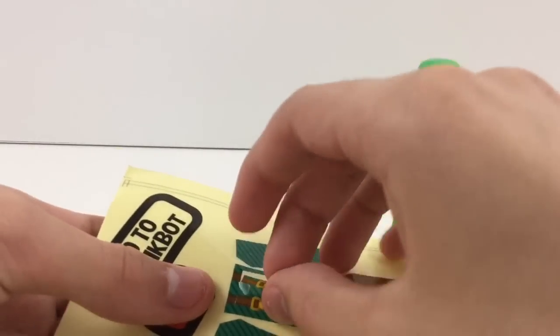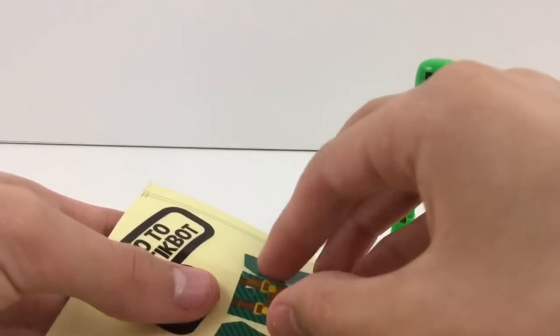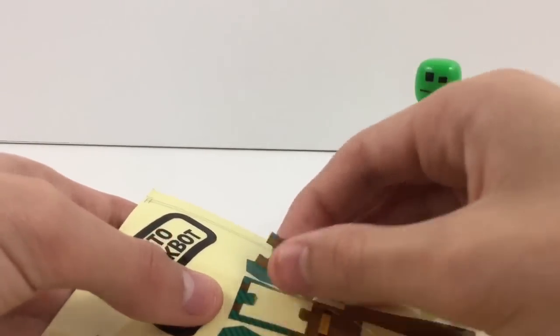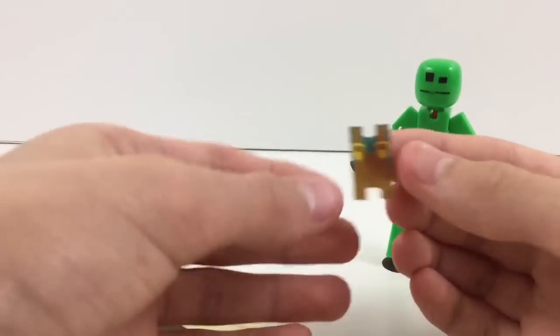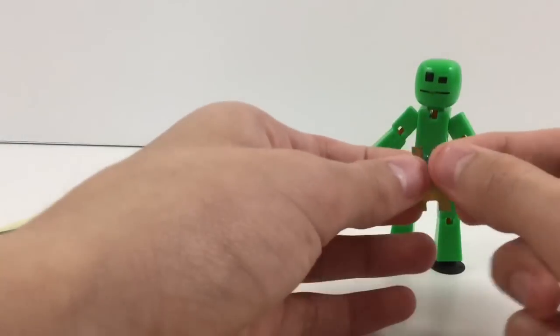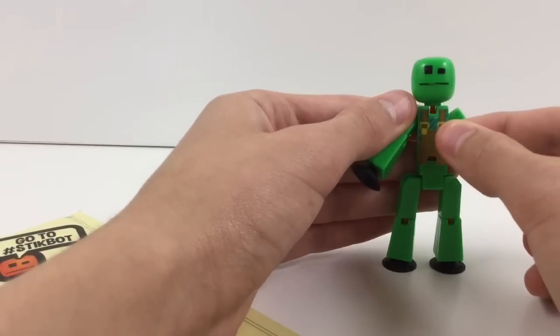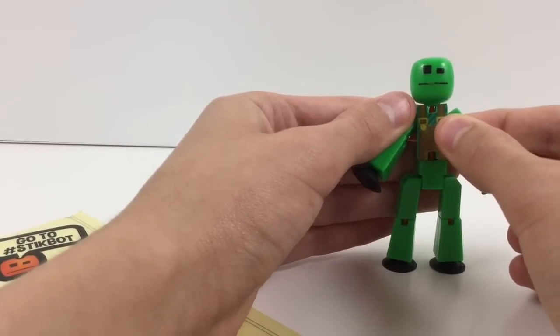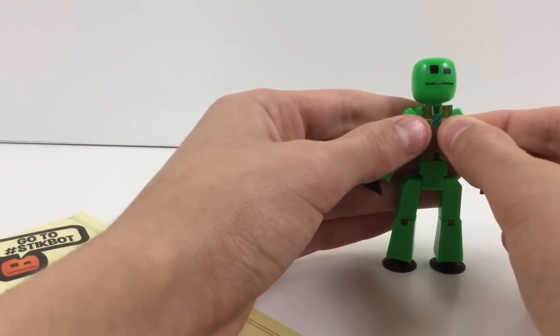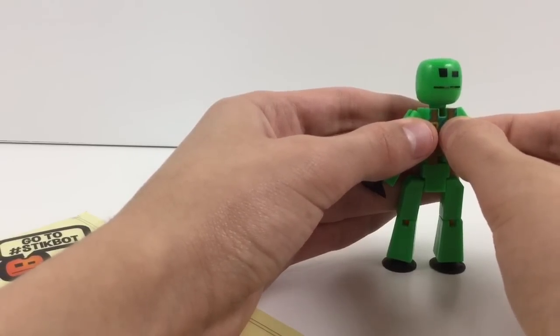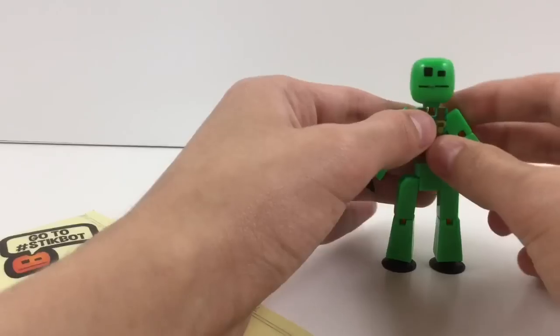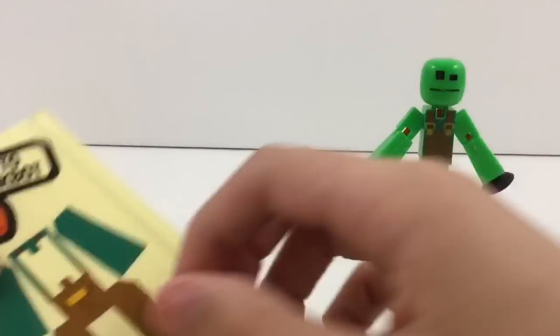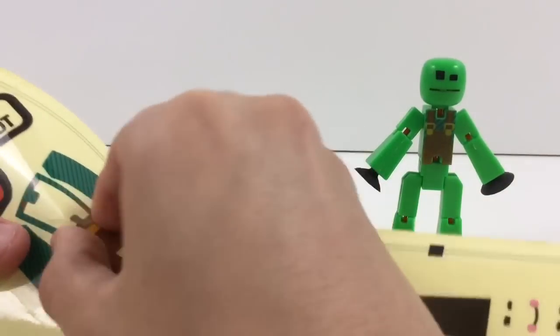So we're just going to take this out, be very careful, we might rip the stickers. There we go, so just this little thing here and then let's carefully put this on. There we go. Alright, so there's that and let's get the waist area.